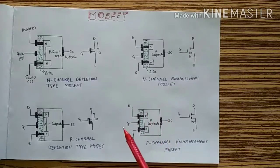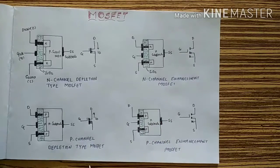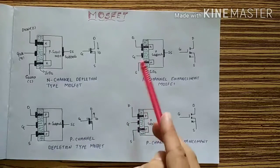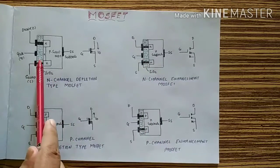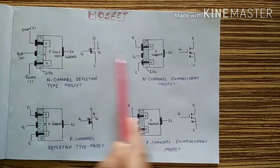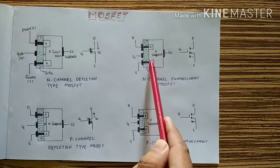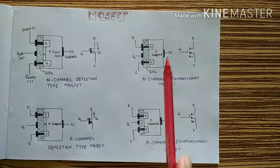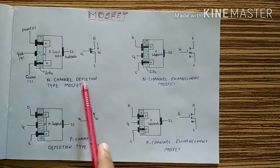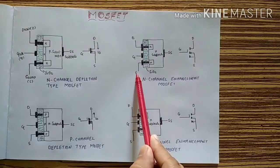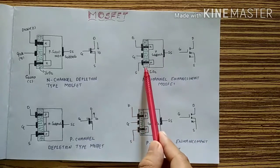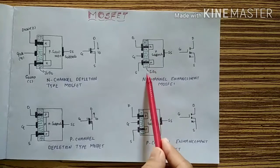Now coming towards the enhancement type — you can see the diagram. The key difference between depletion and enhancement type is that in the depletion type there is insulation between gate and N/P type, but in enhancement type there is no N-channel connected here. The substrate is internally connected with P, and the insulation layer is silicon dioxide. The symbol shows this difference clearly.